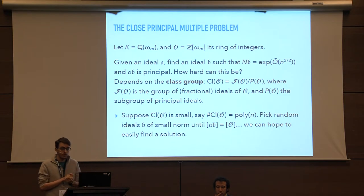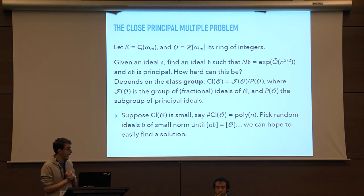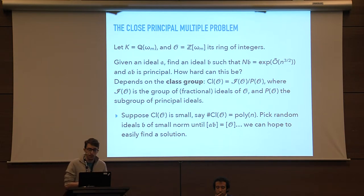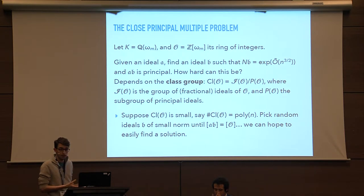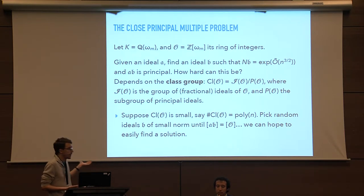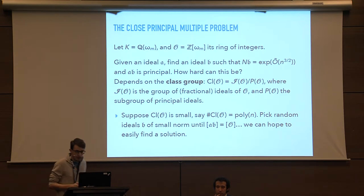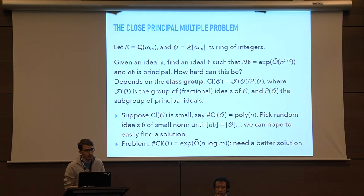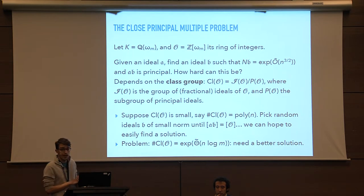If we suppose that the class group is small, say of size polynomial in n, then the problem is simple: pick a random ideal B of small norm and hope that the product AB will be principal. If the class group is small, this will happen with good enough probability. The problem is that the class group is not that small — it is of size exponential in n log m — so we need a better solution.